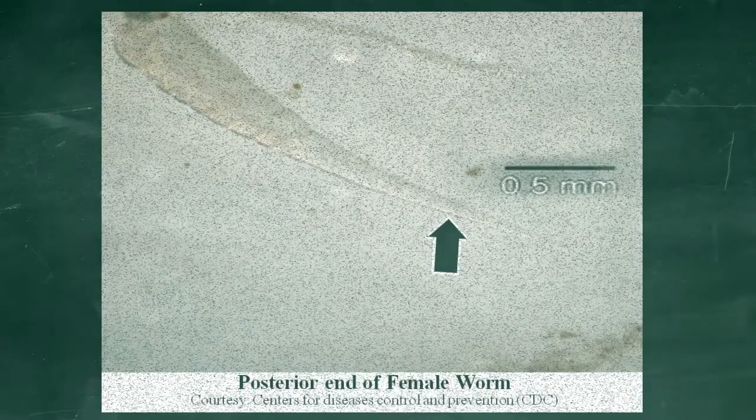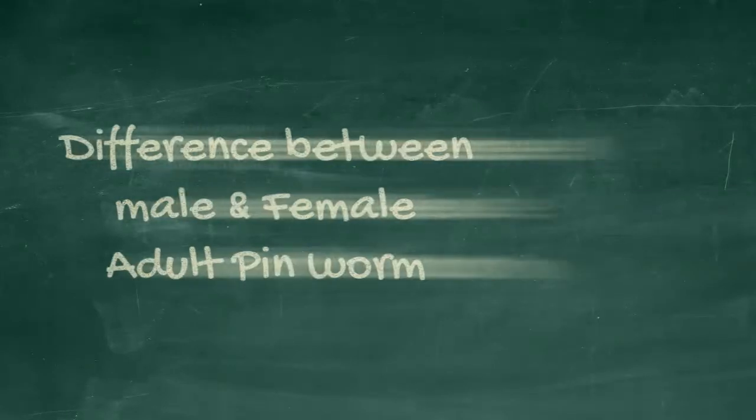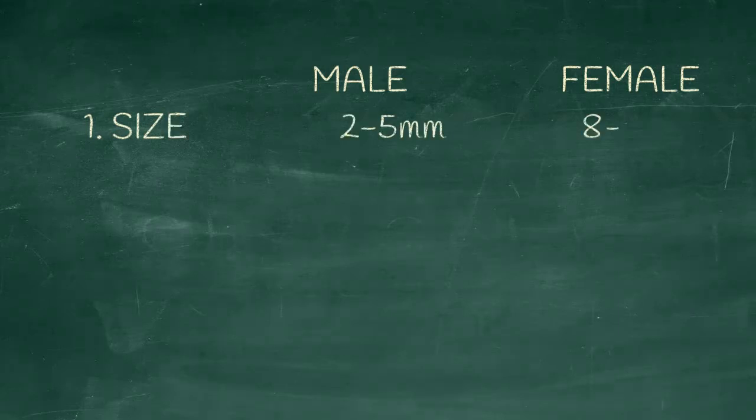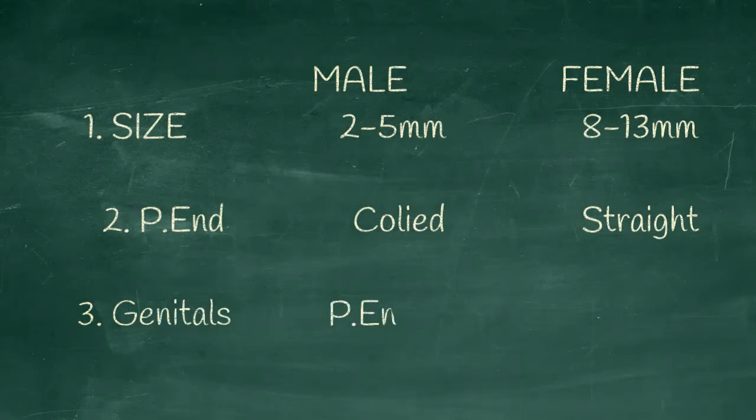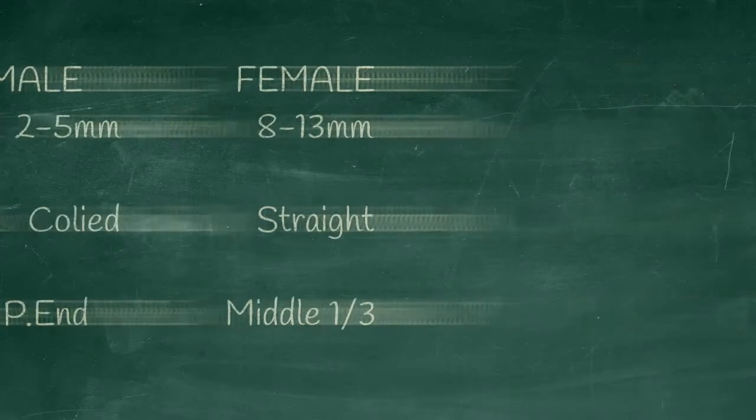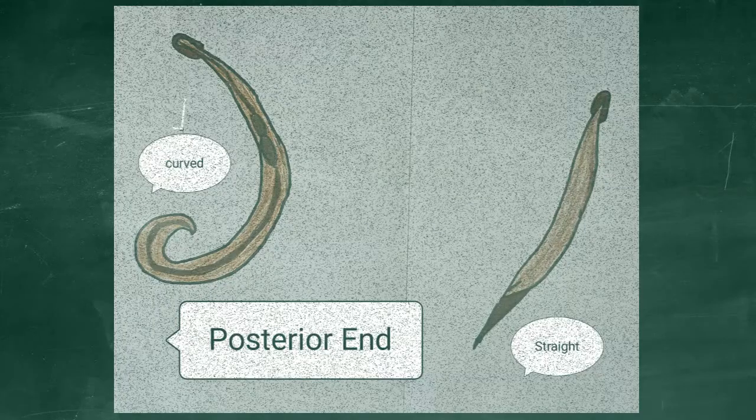This picture you can see the posterior end of the female worm. Difference between male and female worm. Size of the male worm 2 to 5 mm and 8 to 13 mm in case of female worm. Posterior end is coiled in case of male and straight in case of female. Genitals present in the posterior end in case of males and present in middle one third in case of female adult worm. This picture you can see the posterior end of the male and female worm.